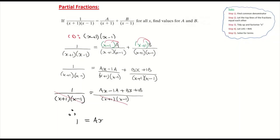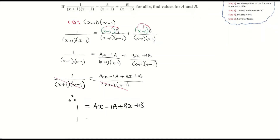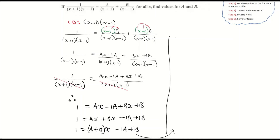Therefore 1 is equal to ax minus 1a plus bx plus 1b. I'm going to rearrange that, putting the x terms first followed by the constants. So 1 equals ax plus bx minus 1a plus 1b. And I'm now going to factorize out the x: 1 equals (a plus b)x minus 1a plus 1b.